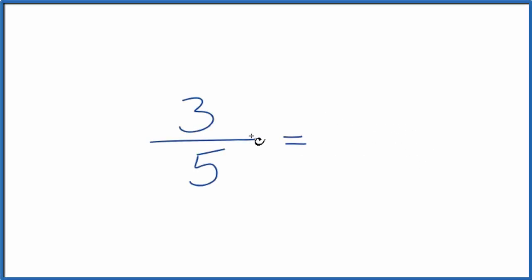So here's how you find equivalent fractions for 3 fifths, or 3 over 5. What we're trying to do is find the same value for 3 fifths, but have a different numerator and denominator.